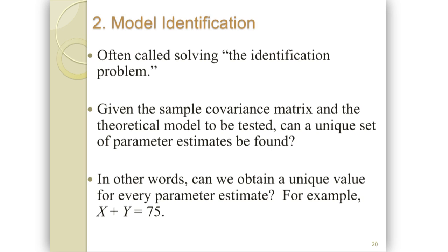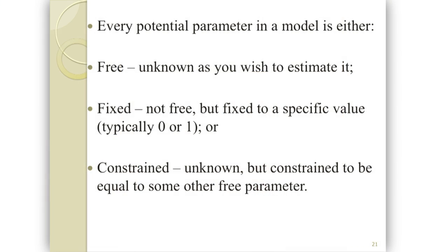A simple example from ninth grade algebra: x plus y equals 75 has an infinite number of solutions — that's not going to be satisfying because every time you run the data you get a different answer. In SEM, every potential parameter, whether in your model or not, is one of three types: a free parameter, a fixed parameter, or a constrained parameter.